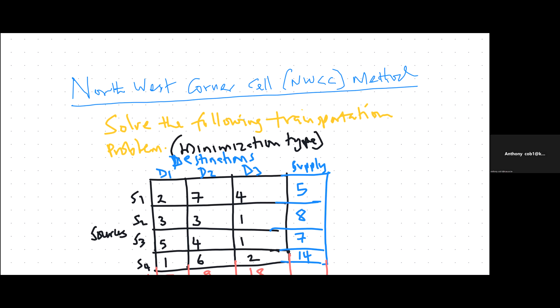We have defined several terms, like what is a basic feasible solution, what is a feasible solution, what is a non-degenerate basic feasible solution, and what is a degenerate solution. We have said that there are three methods of solving transportation problems: the northwest corner cell method, the least cost cell method, and Vogel's approximation method. We also mentioned that there are two methods of optimizing transportation solutions: the modified distribution method (MODI) and the stepping stone method.